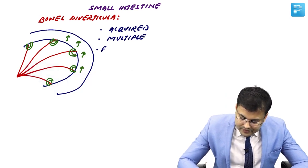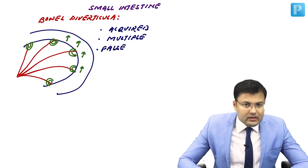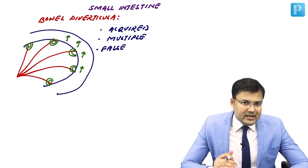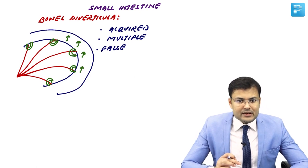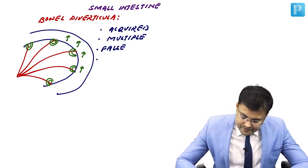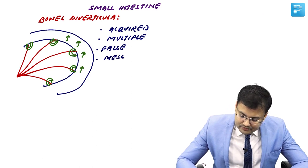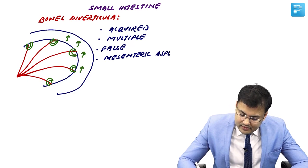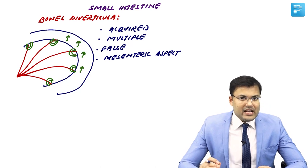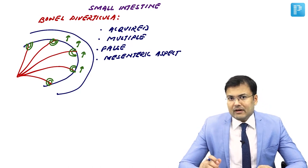Regarding location, the diverticula are located along the mesenteric aspect or the anti-mesenteric border. In most cases they are located along the mesenteric aspect. This applies to both small bowel as well as large bowel diverticula.